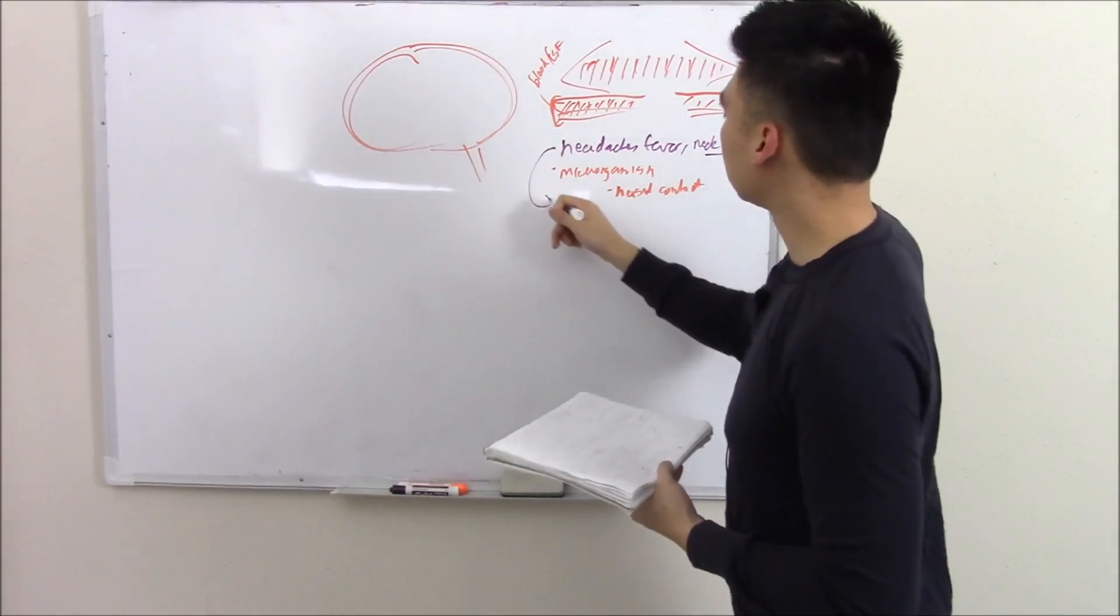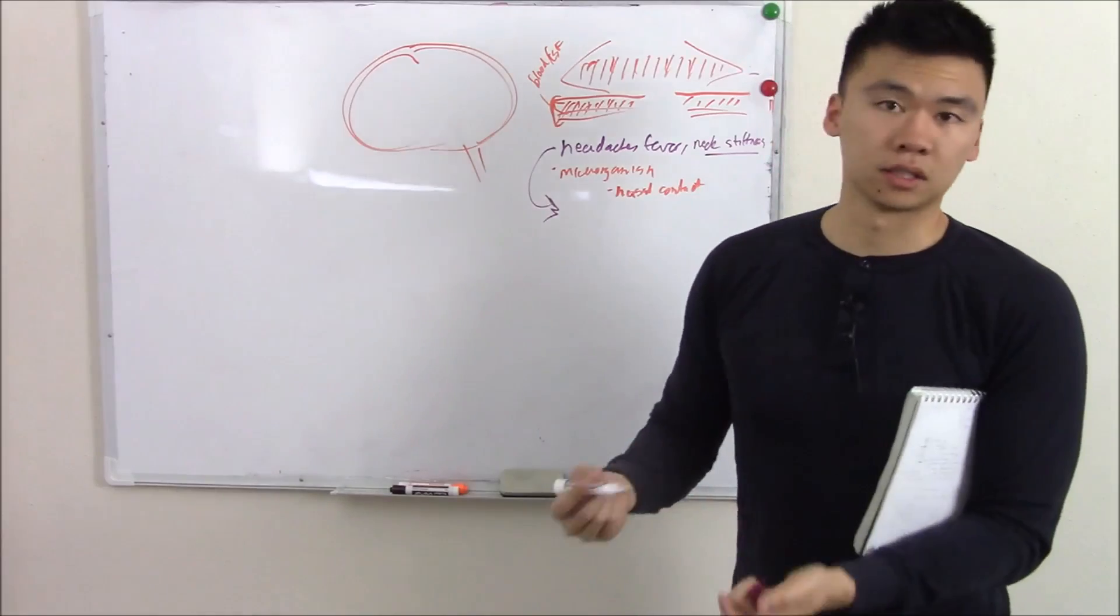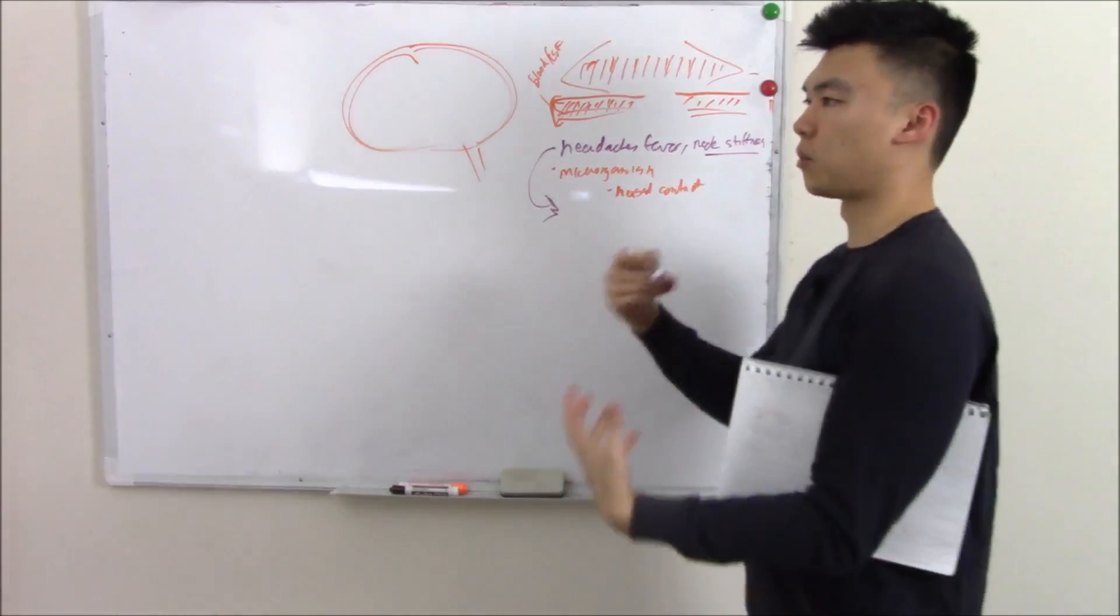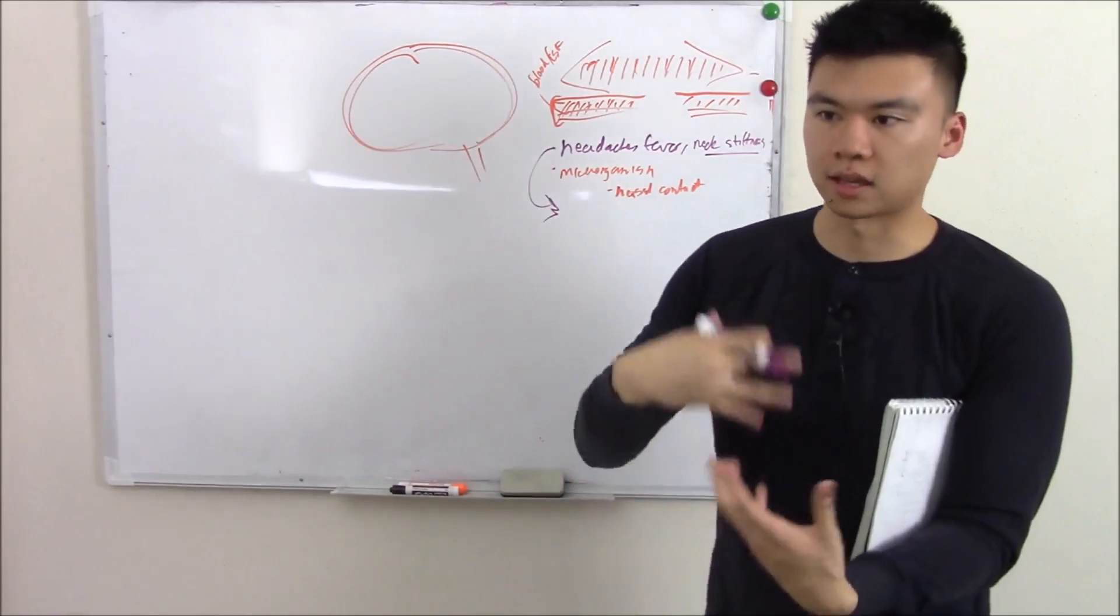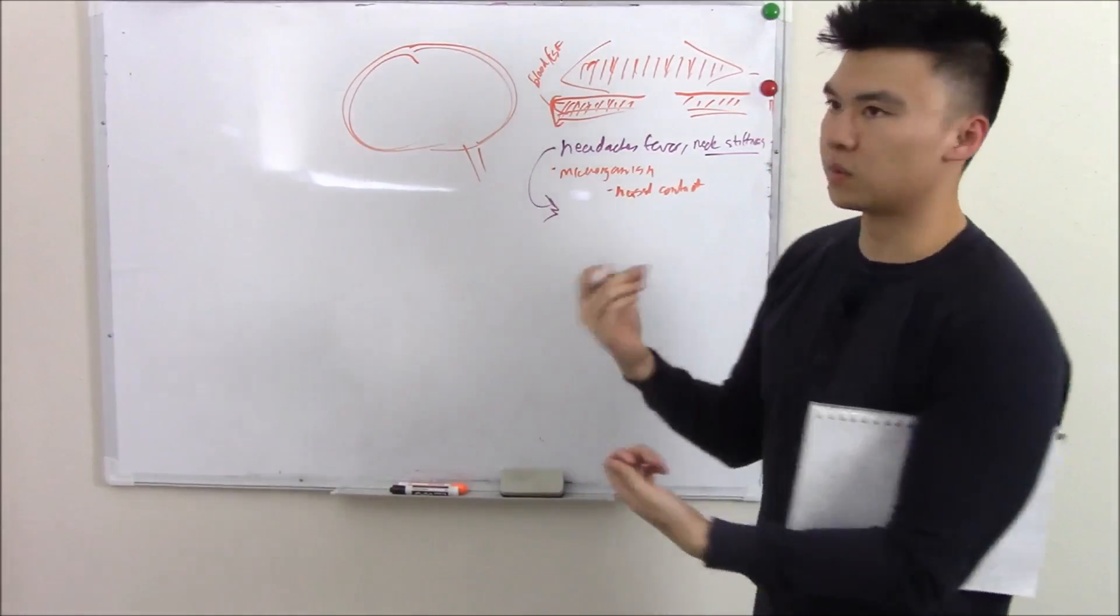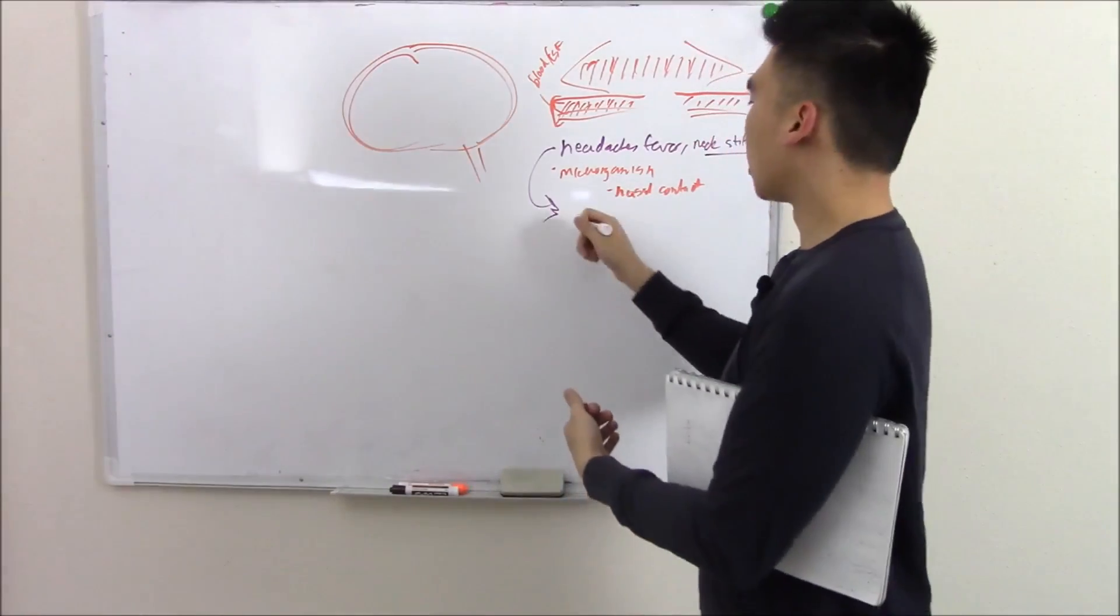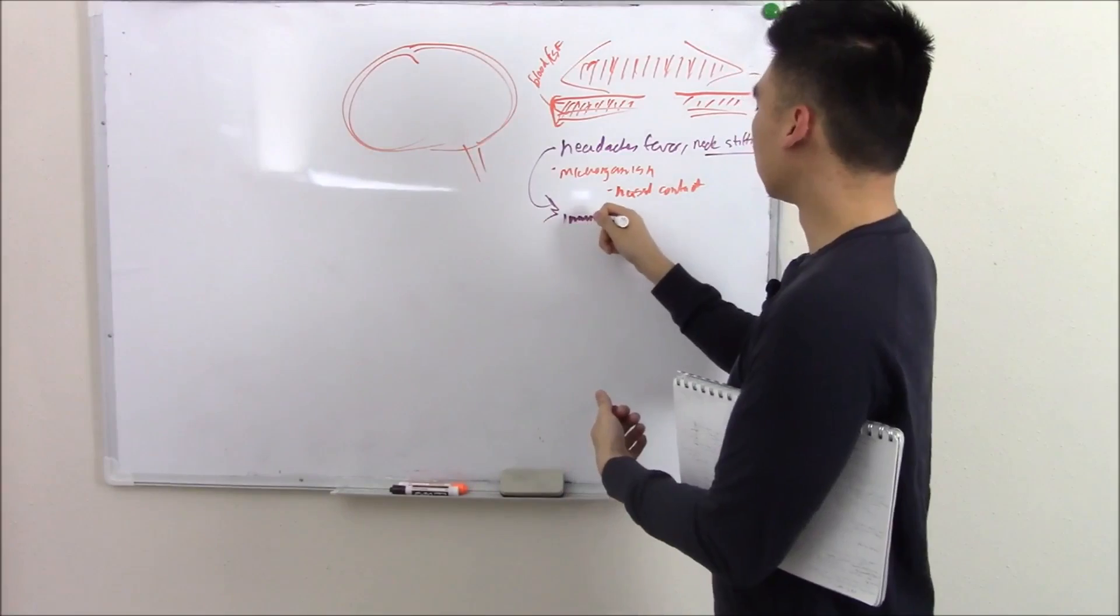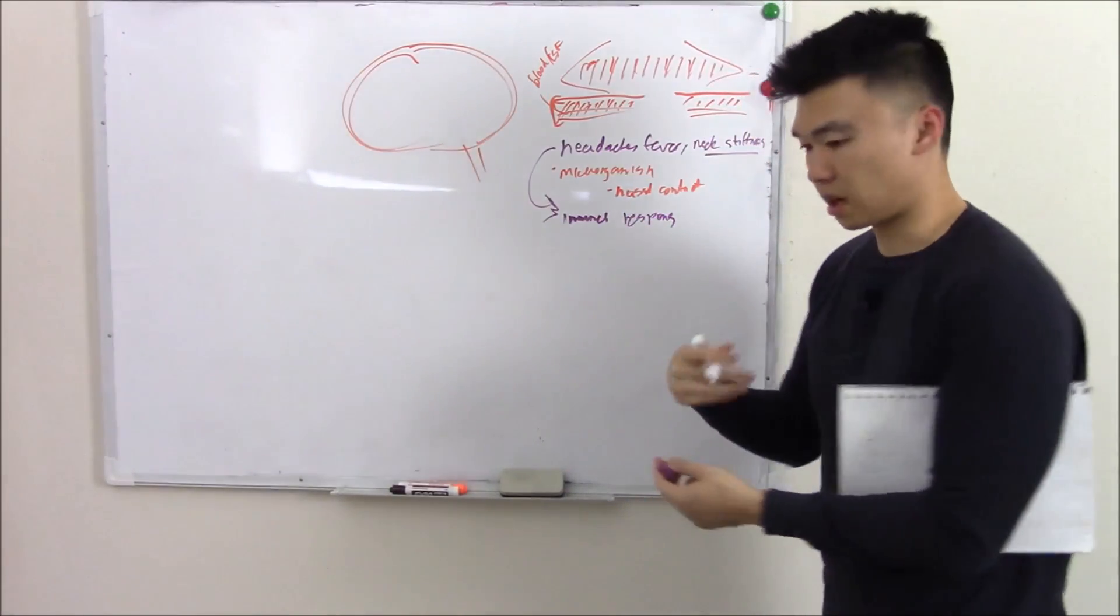Now what causes all these signs? The bacterial infection itself is usually not the cause of this. Instead it's our body's immune system or immune response to it. So we release a ton of cytokines, cause a lot of inflammation. In fact infections of your meninges we call it meningitis - inflammation of your meninges. So we have immune response causing that inflammation, causing that pain.